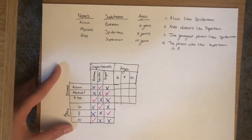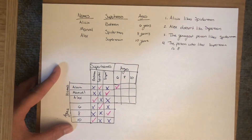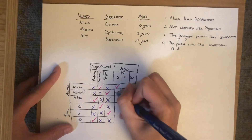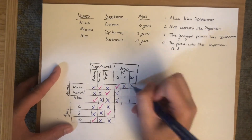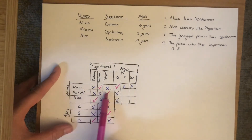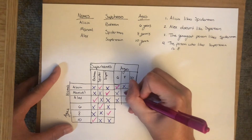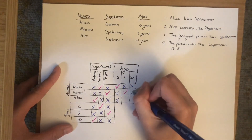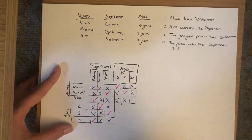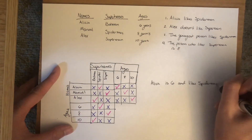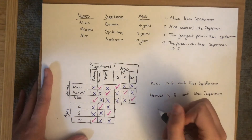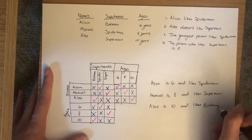Now we know which superhero each person likes, and which superhero corresponds to what age. We know Alicia likes Spider-Man and whoever is six likes Spider-Man, so Alicia must be six — we check Alicia and six and fill in the X's. Then Manuel likes Superman and whoever is eight likes Superman, so Manuel must be eight. And Alex likes Batman and whoever is ten likes Batman, so Alex must be ten. Our final answer: Alicia is six and likes Spider-Man, Manuel is eight and likes Superman, and Alex is ten and likes Batman.